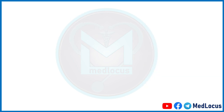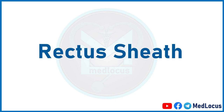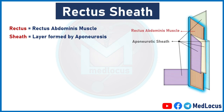Now we will understand the concept of rectus sheath. By the name, rectus refers to the rectus abdominis muscle and sheath means the aponeurotic sheath of abdominal muscles, which we are seeing arranged anterior and posterior to the rectus abdominis muscle. The aponeuroses of these muscles enclose the rectus abdominis muscle on either side of the linea alba, which is known as the rectus sheath.